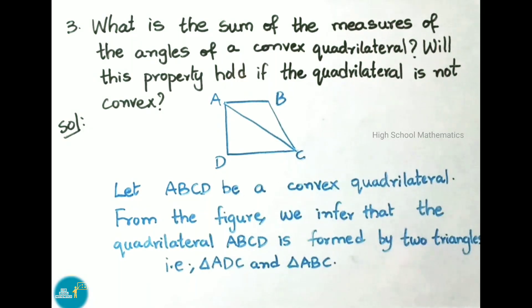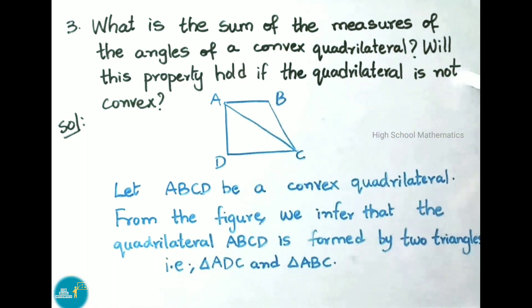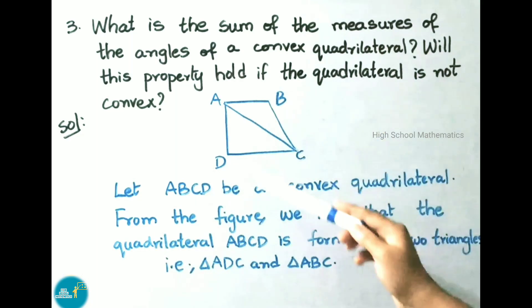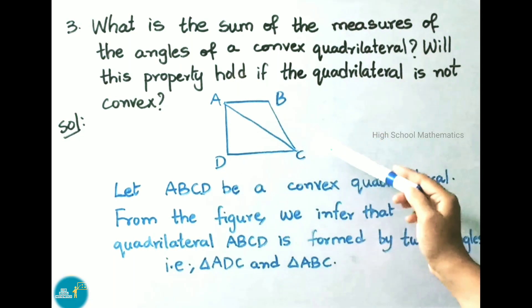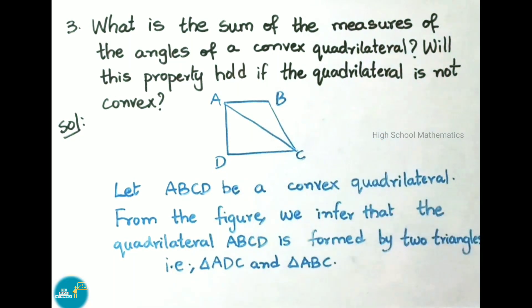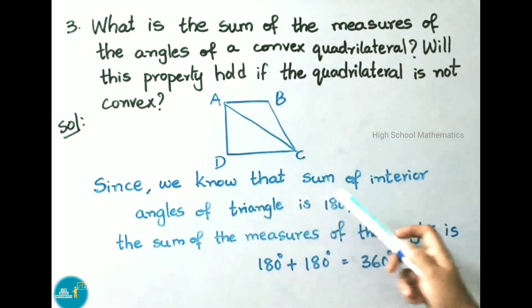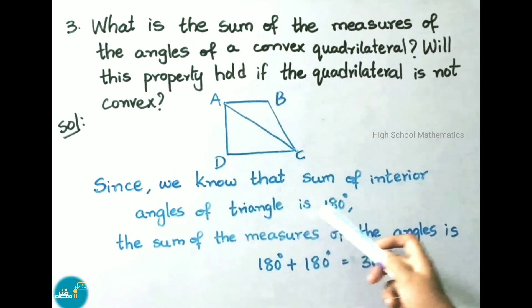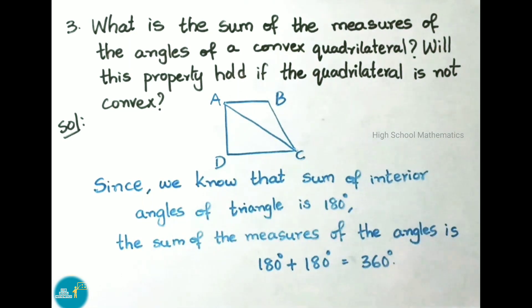Question number 3: what is the sum of the measures of the angles of a convex quadrilateral? Will this property hold if the quadrilateral is not convex? Let ABCD be a convex quadrilateral. From the figure, the quadrilateral ABCD is formed by two triangles: triangle ADC and triangle ABC. Since the sum of interior angles of a triangle is 180 degrees, the sum of the measures of both triangles is 180 + 180 = 360 degrees.